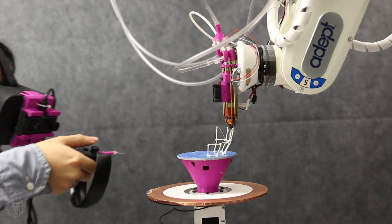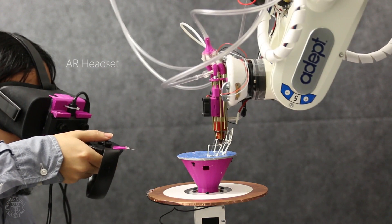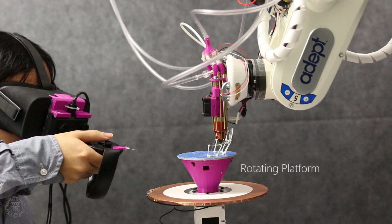ROMA's hardware consists of three components: the user's augmented reality headset with accompanying controllers, the shared rotating platform, and the robotic 3D printer.